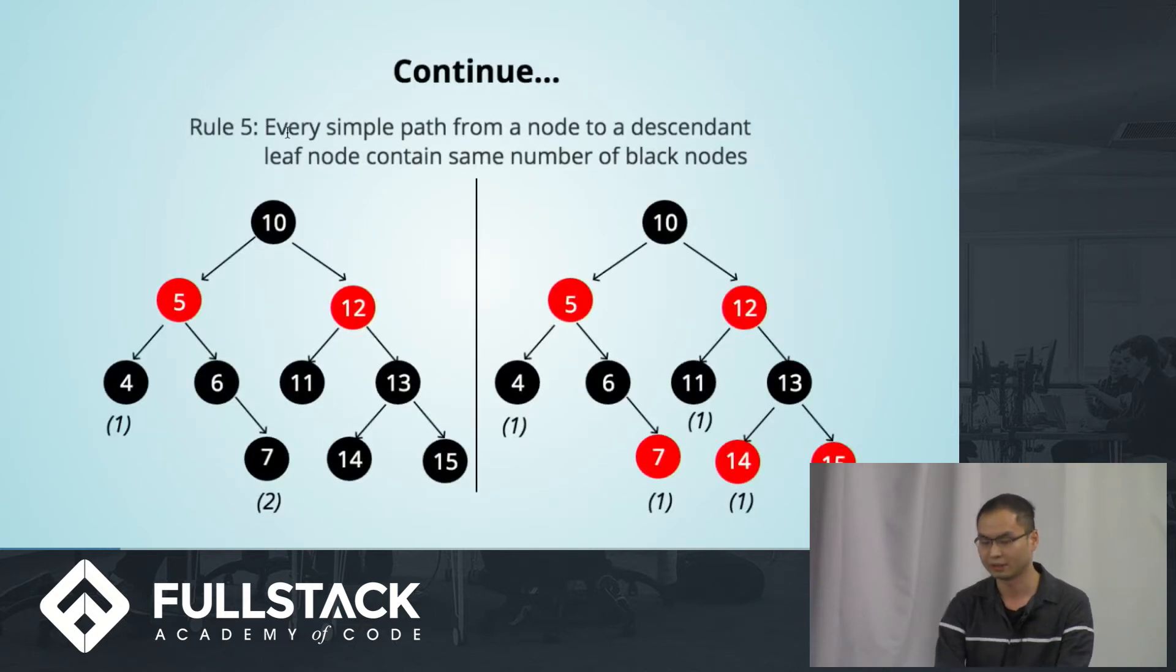Rule 5. Every simple path from a node to a descending leaf node has the same number of black nodes. The path you pass through from the root node to the leaf node, you gotta count how many black nodes in your path. For example, in this one, it only contains one black node. And for this path, it contains two black nodes. So this is not a valid red-black tree. Take a look at the right side. I just changed the color to 7 and 14, changed it from black to red. And now you have valid red-black tree.